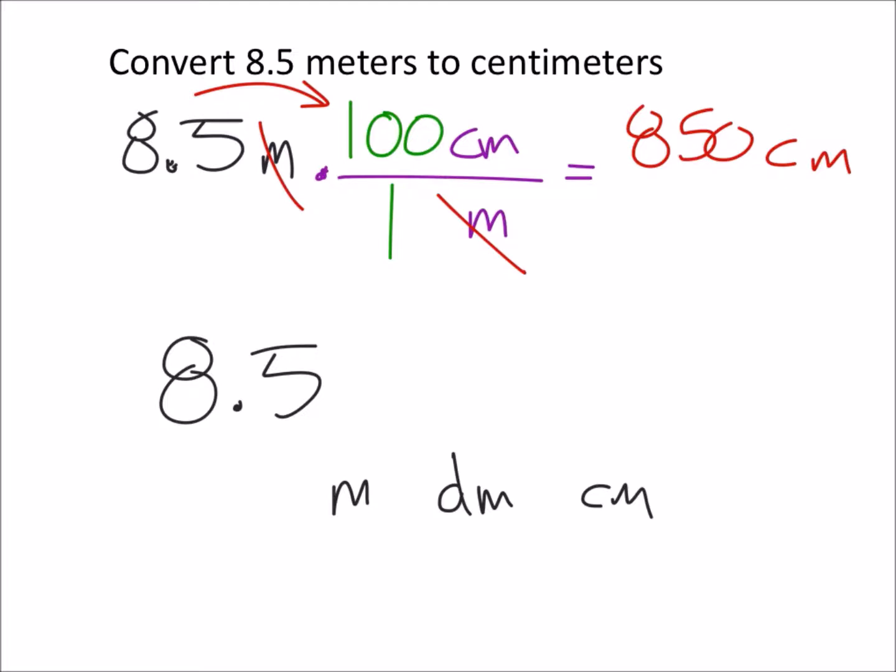So to change meters to centimeters we would move the decimal two times to the right, and so we'll move this one two times to the right filling all our empty spaces with zeros and again we end up with that 850 centimeters.